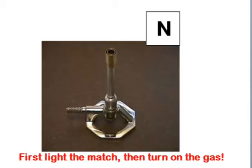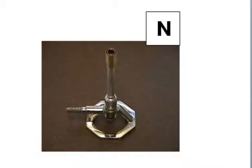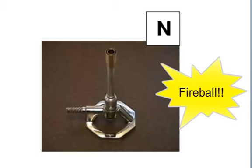First, you want to light the match. Then you want to turn on the gas. Because if you do it the opposite way, what will happen if you turn the gas on and then you light the match, that gas will be coming out of the top of that Bunsen burner and filling that air space with the gas. So when you light that match, it's gonna create like a little fireball right in front of you. And it could light your hair on fire. So we don't want to do that.